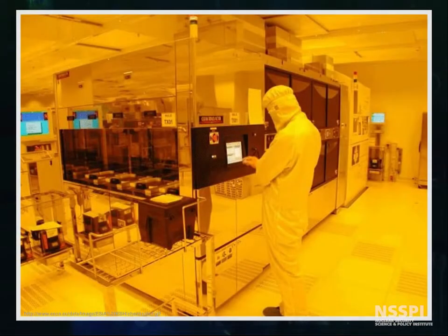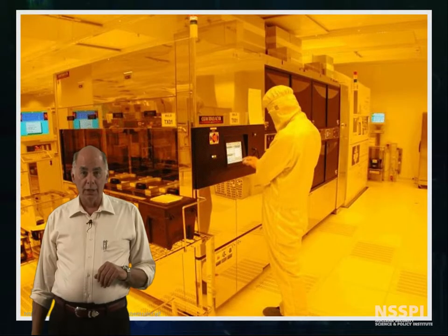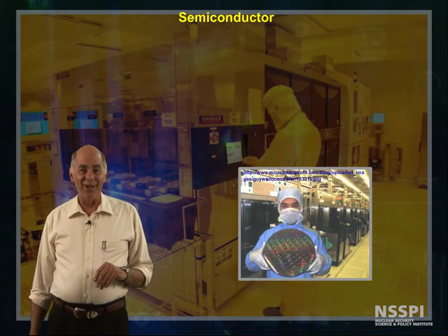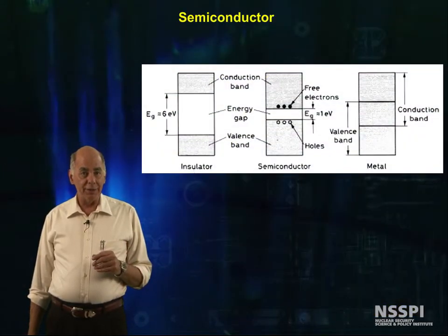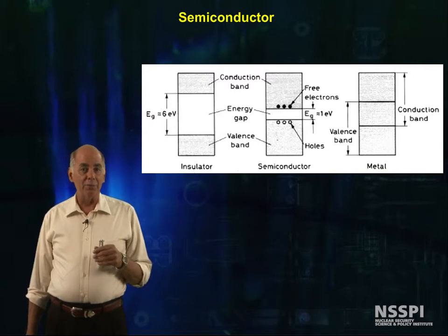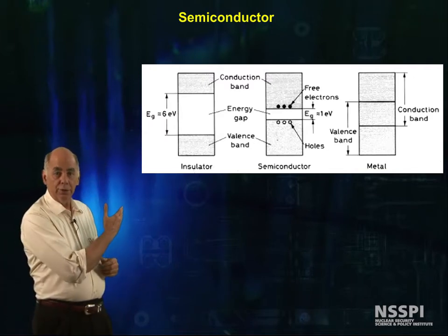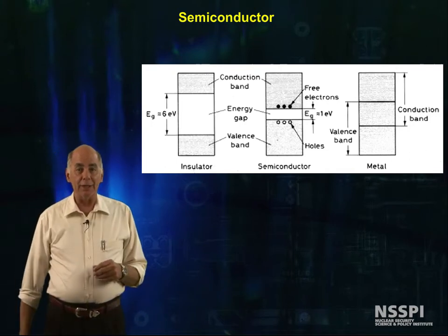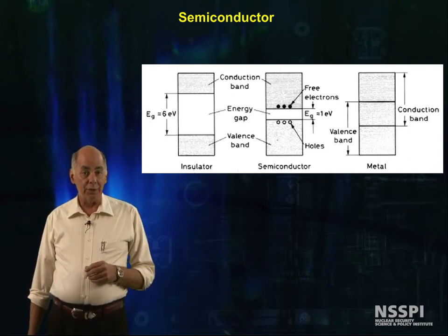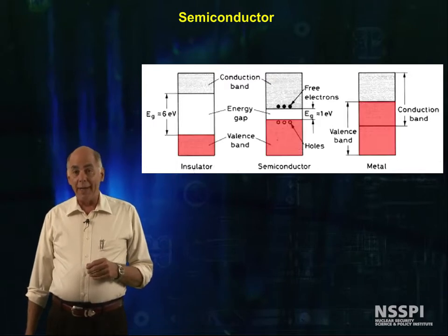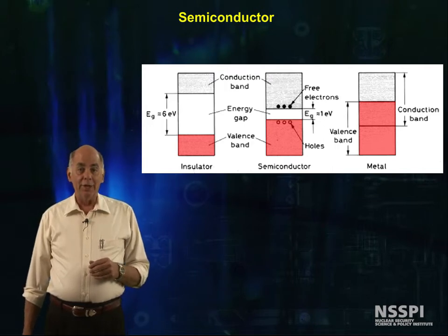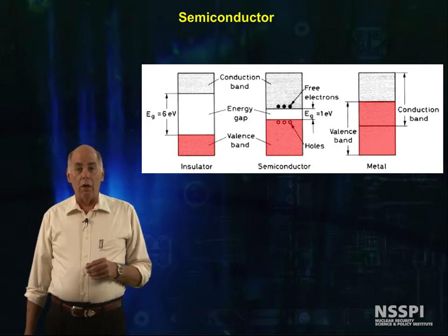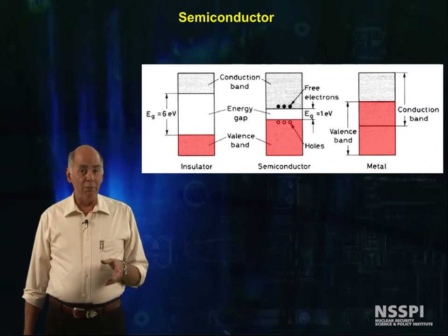Now we're going to talk about semiconductors and detectors. This naturally leads to the question of exactly what's a semiconductor. Let's turn to the energy diagrams used in solid state physics. These pictures are basically schematics of where the electrons stay in a material. The bottom band is called the valence band, and the electrons in here are electrons that form bonds with neighboring atoms.